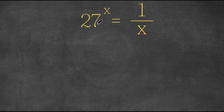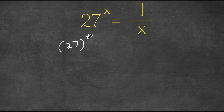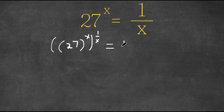What I'm first going to do is take the power of 1 over x on both sides. So we have 27 to the power of x, to the power of 1 over x, and this is equal to 1 over x to the power of 1 over x.